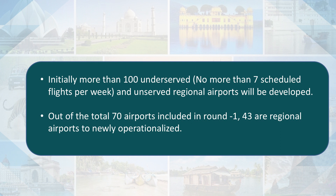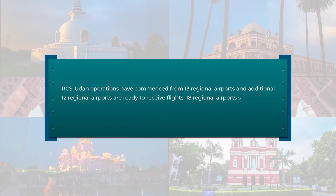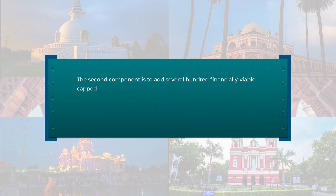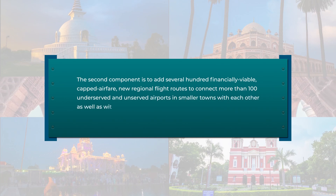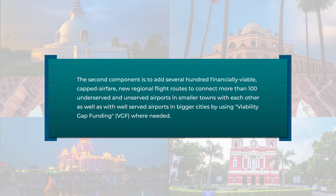The initial funding of INR 4,500 crore — equivalent to $4.7 billion or €610 million — for the enhancement of 50 regional airports was approved in May 2017. Out of the total 70 airports included in Round 1, 43 are regional airports to be newly operationalized. RCS UDAN operations have commenced from 13 regional airports, an additional 12 are ready to receive flights, and 18 still require significant upgradation.